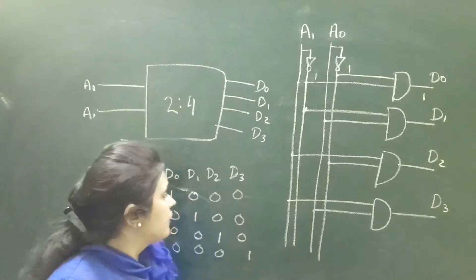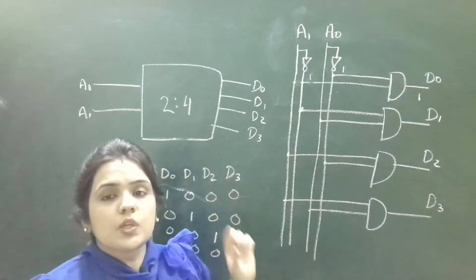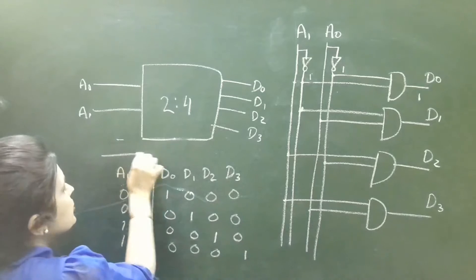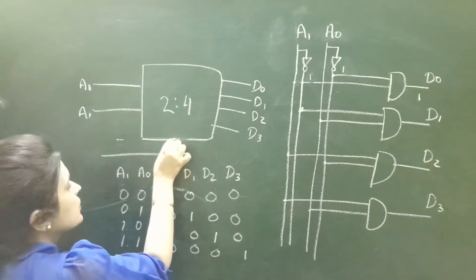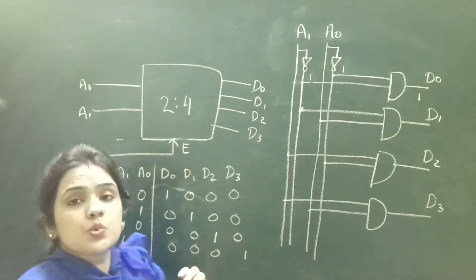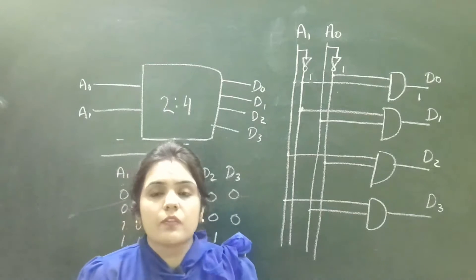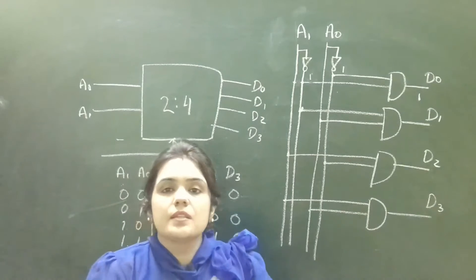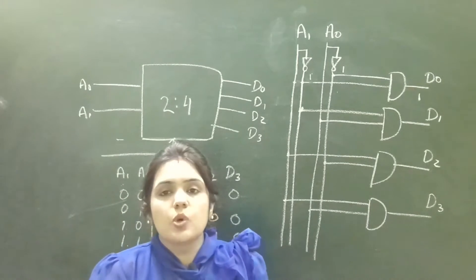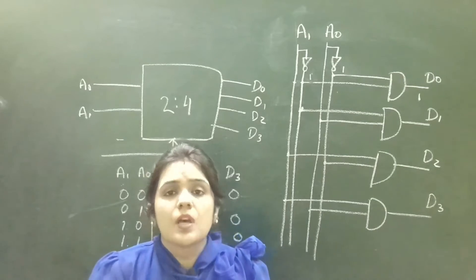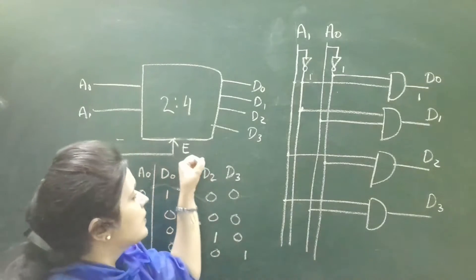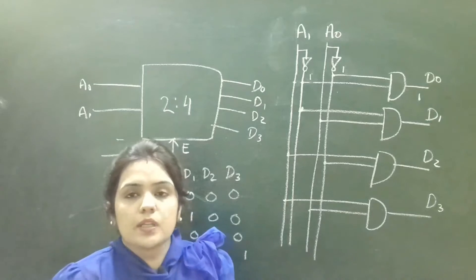Now for a decoder with enable input, we should add another input — a third input to this decoder. This enable input is used to control the decoder. When the value of E is 0, the decoder will be disabled. When the value of E is 1, the decoder will be enabled. So this enable input enables or disables the decoder.